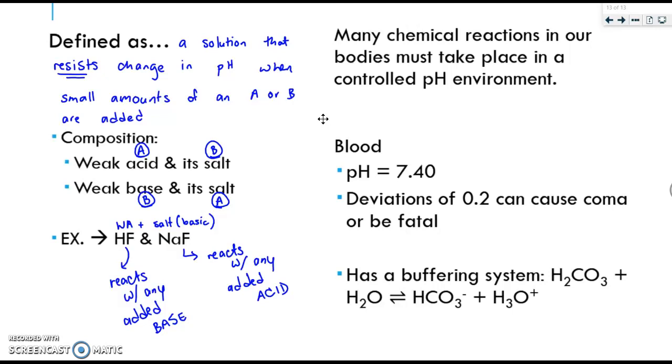That's really all you need to know for buffers, the definition, and that very brief information there. Finally, many chemical reactions in our bodies must take place in a controlled pH environment. And then I have provided an example. Your blood typically has a pH of 7.40. Deviations of only about 0.2 can cause coma or become fatal. And therefore part of this is why you have a buffering system. You're going to have a buffering system within your blood to kind of help with this and to help keep the pH at a constant level.